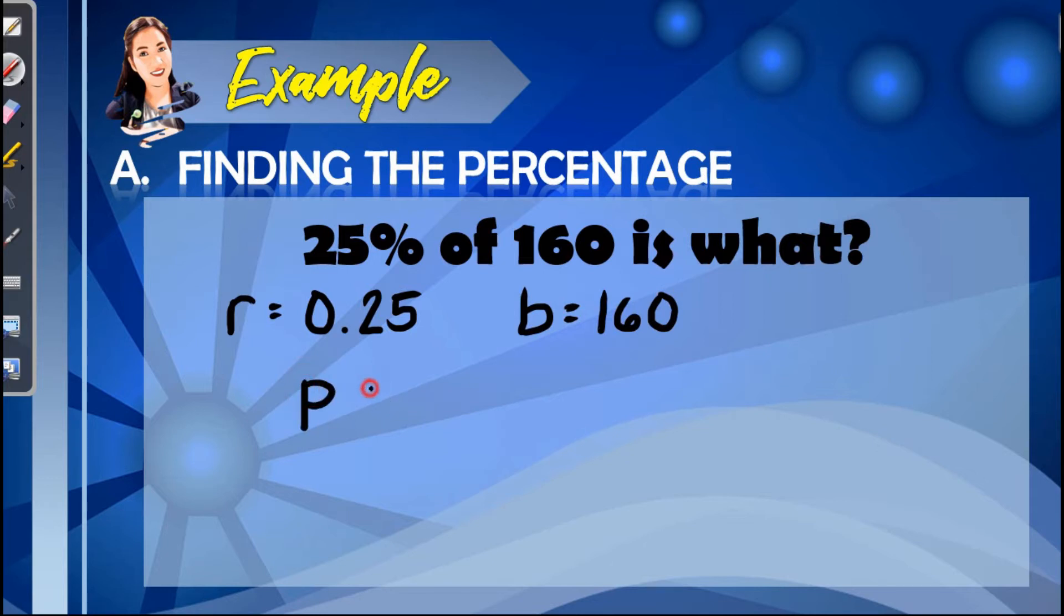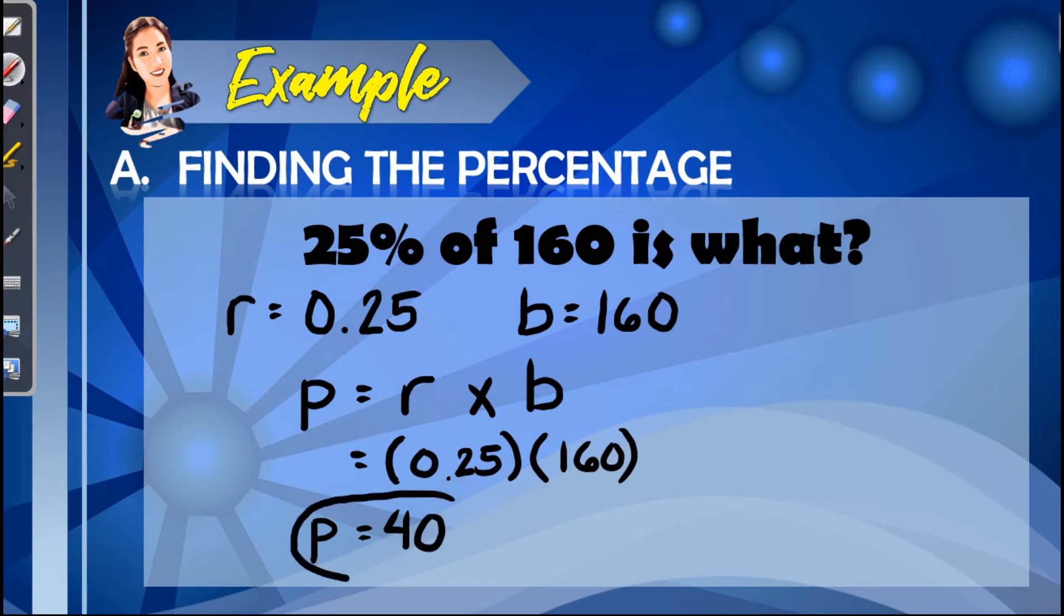Following the formula, we have P is equal to the rate times the base. We'll just simply do substitution. So, we have 0.25 times 160. Multiplying these two numbers, we will have the value of P, which is 40. This means that 25% of 160 is 40.